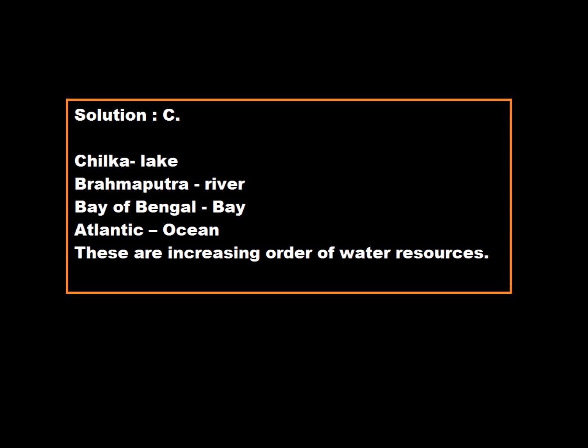Option C is correct. Chilika is a lake, Brahmaputra is a river, Bay of Bengal is a bay, and Atlantic is an ocean. These are in increasing order of water resources. Hence, Option C is correct, which is CADB.